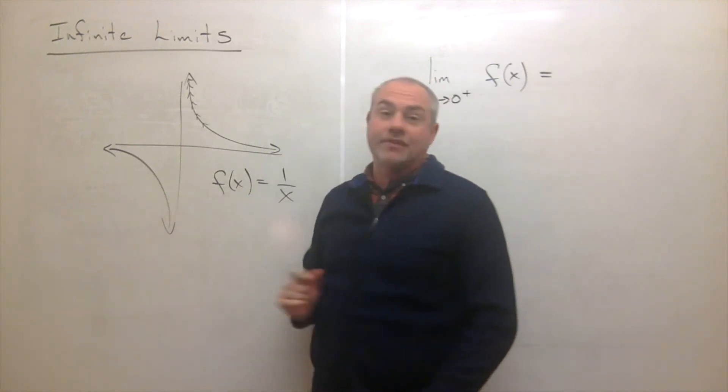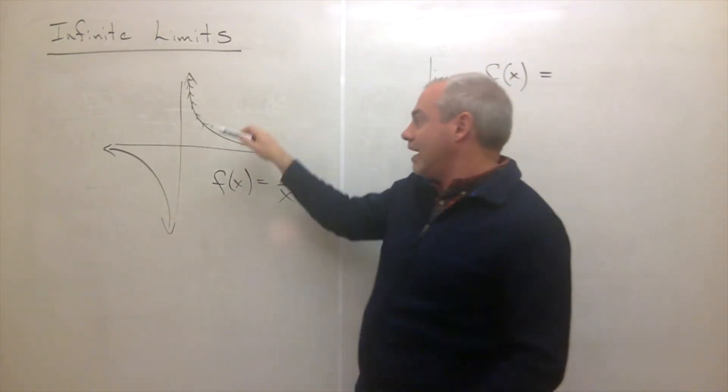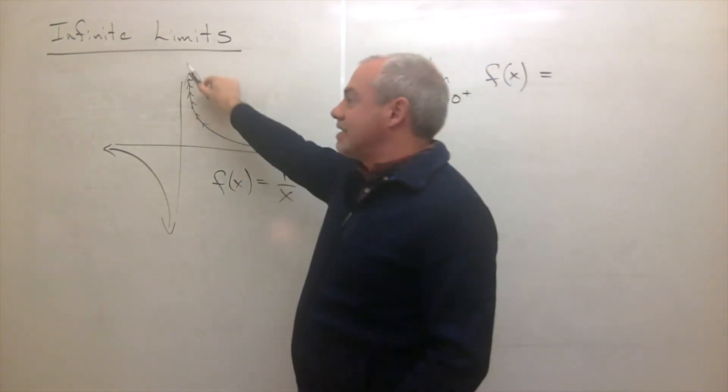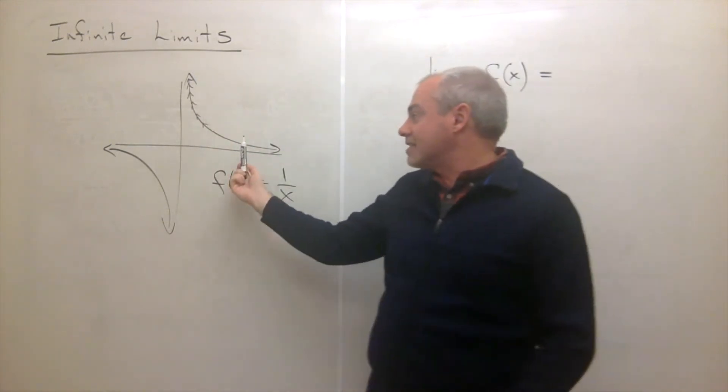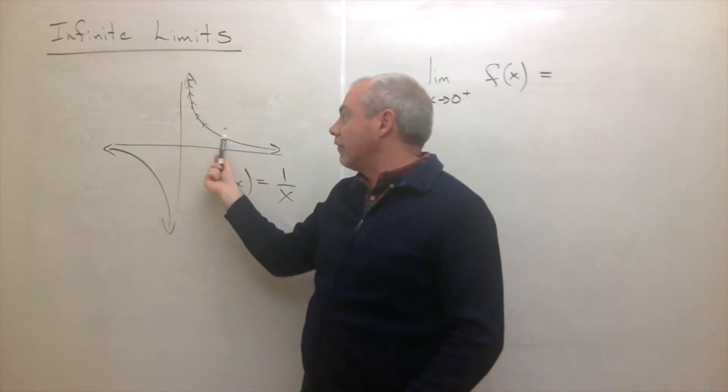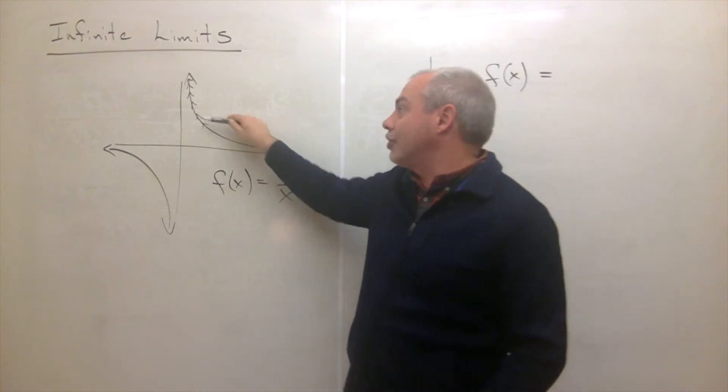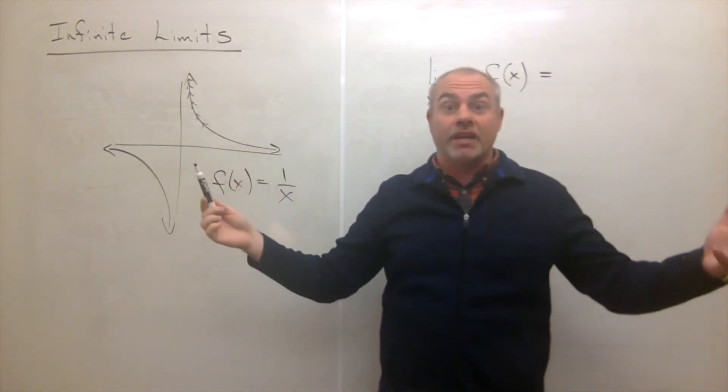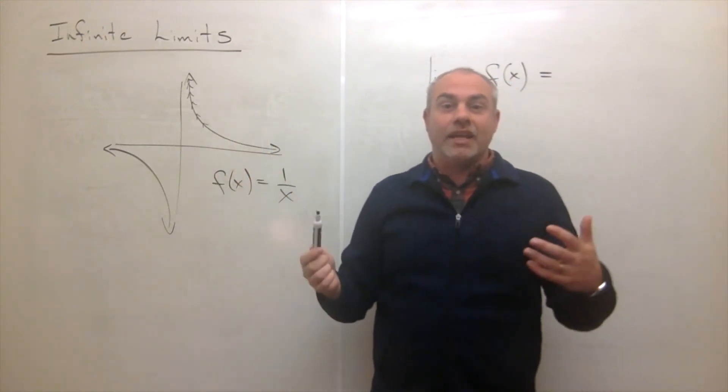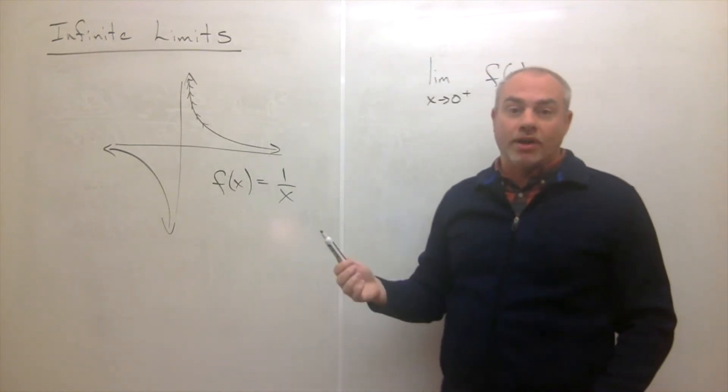This function does not have a limit at 0. But we can talk about what is its behavior as x gets close to 0 from the right side. And the behavior is it gets really, really big, right? And it gets bigger than any value that I want.